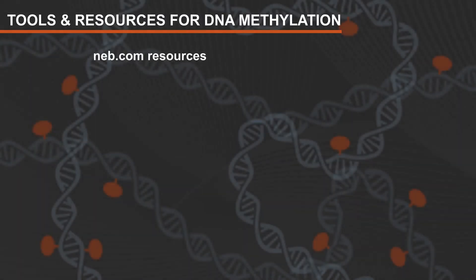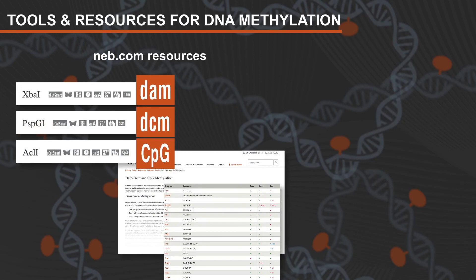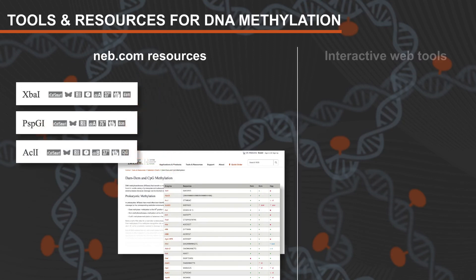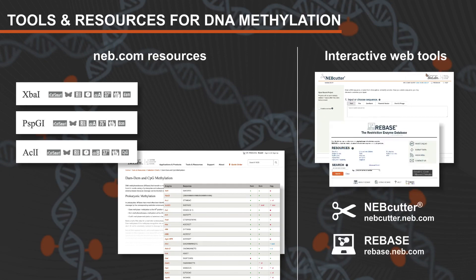NEB provides DAM, DCM, and CpG methylation sensitivity data for all of our restriction enzymes. If you are working with a methylation-sensitive enzyme and digesting a plasmid, we recommend using our interactive tool, NEB Cutter, to determine if your plasmid or sequence of interest will be impacted by overlapping methylation. Methylation information is also available on Rebase.